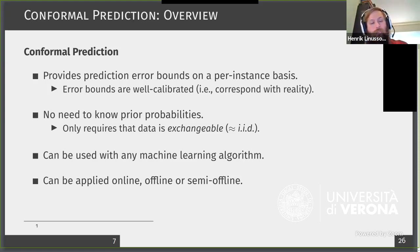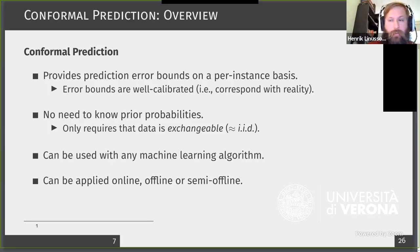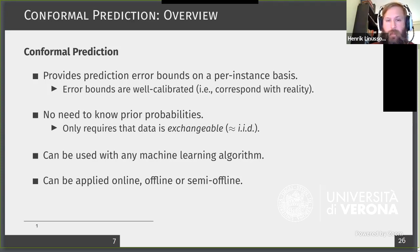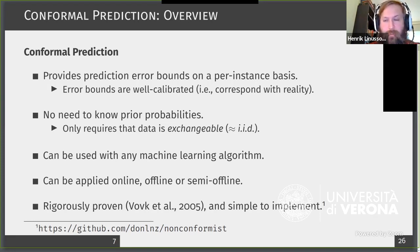We can apply this framework online, offline, or semi-offline. In an offline setting, we create the model once and use it for all predictions. In a completely online scenario, we incrementally update the model based on new observations. Semi-offline means we sporadically update the model. Finally, the whole thing is rigorously proven and relatively simple to implement — and here I'll insert a shameless plug for my own implementation available under the MIT license on GitHub.